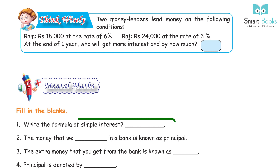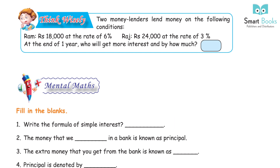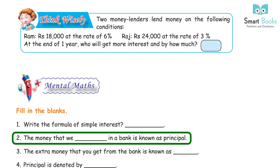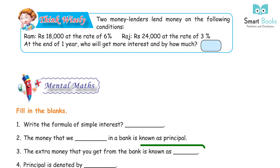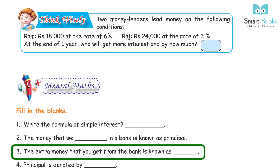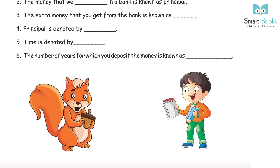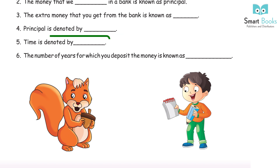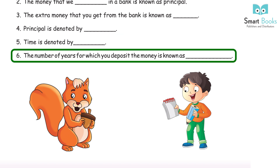Mental Maths — Fill in the blanks: (1) Write the formula of simple interest. (2) The money that we deposit in a bank is known as principal. (3) The extra money that you get from the bank is known as interest. (4) Principal is denoted by P. (5) Time is denoted by T. (6) The number of years for which you deposit the money is known as time.